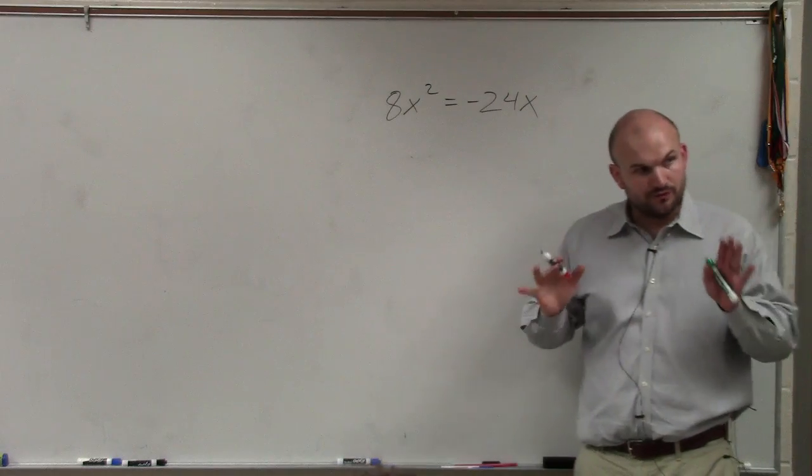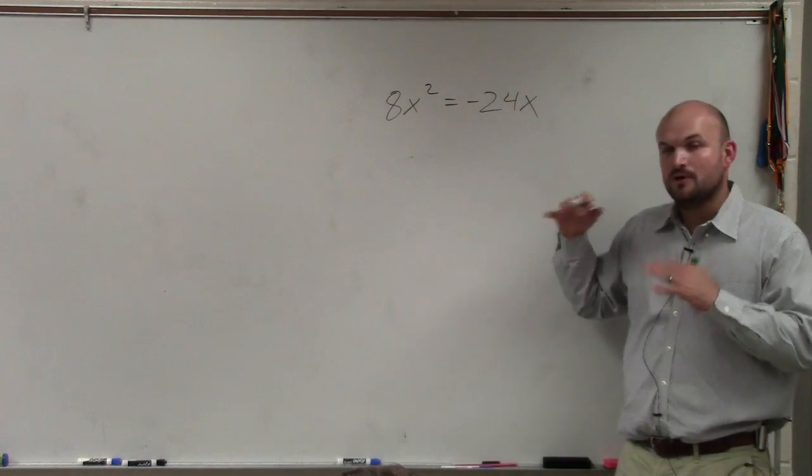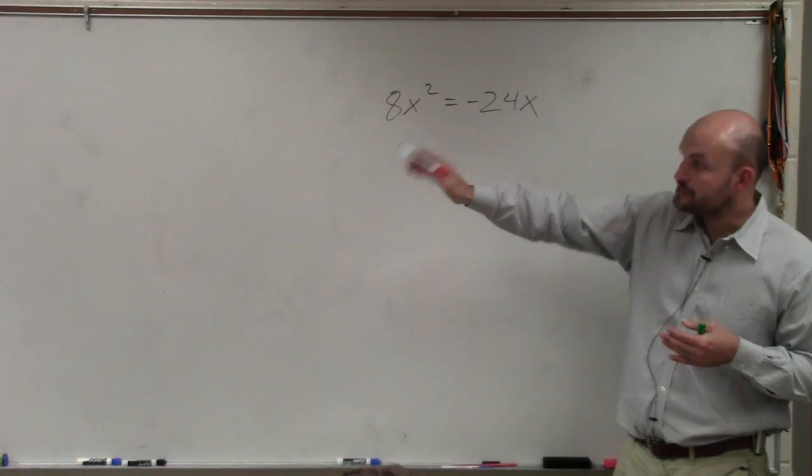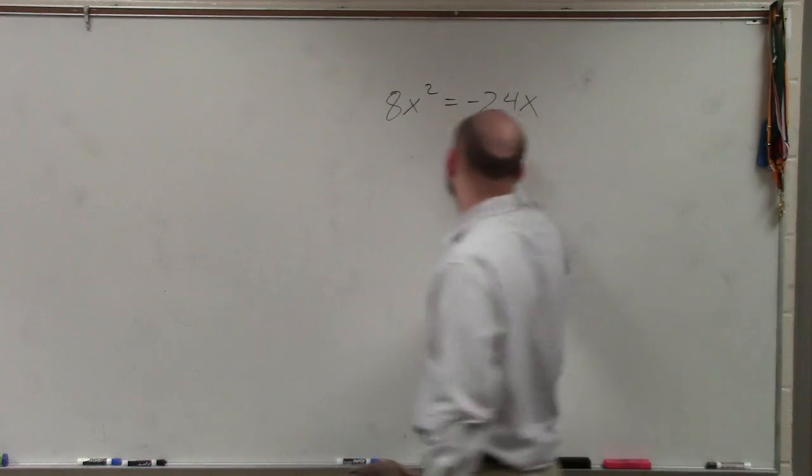So whenever you have two variables, an x squared and an x, we have to use factoring. And to do that, we have to set it first equal to 0.